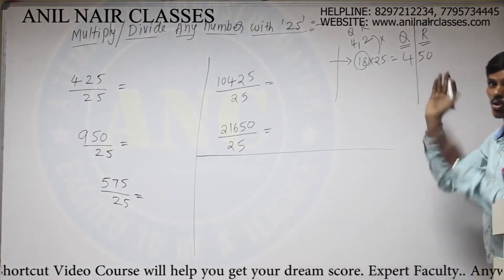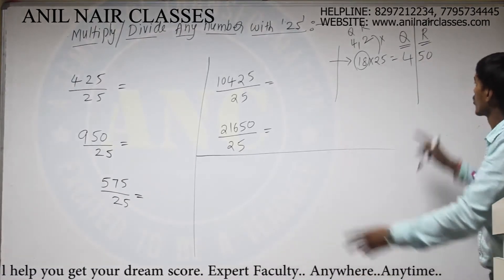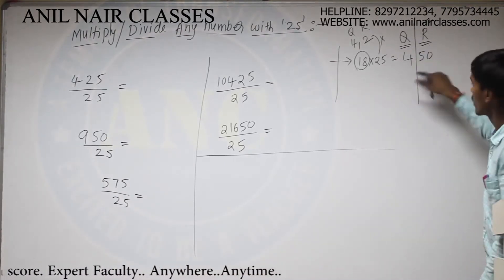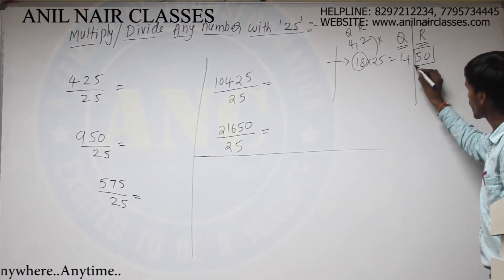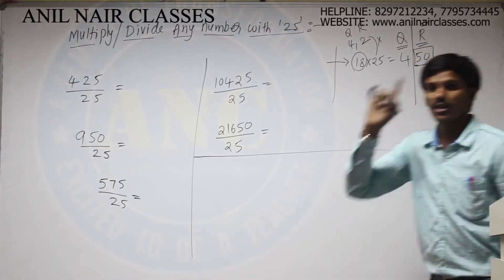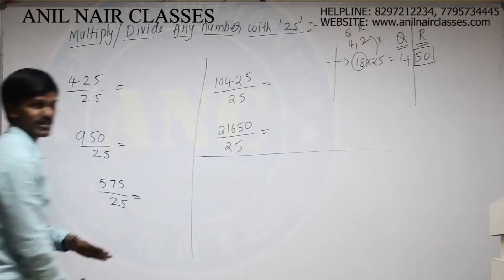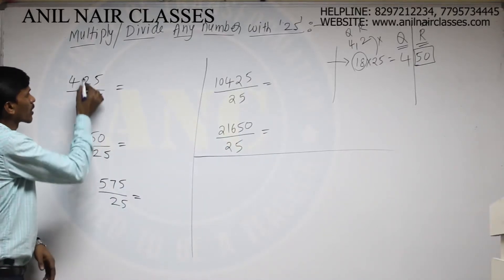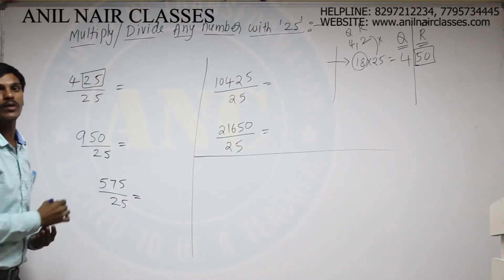So, I am dividing this number into coefficient and remainder. First result will be of coefficient and the last two digits will always be the result of remainder. Here, I am always considering the last two digits of a number. Last two digits is 25.